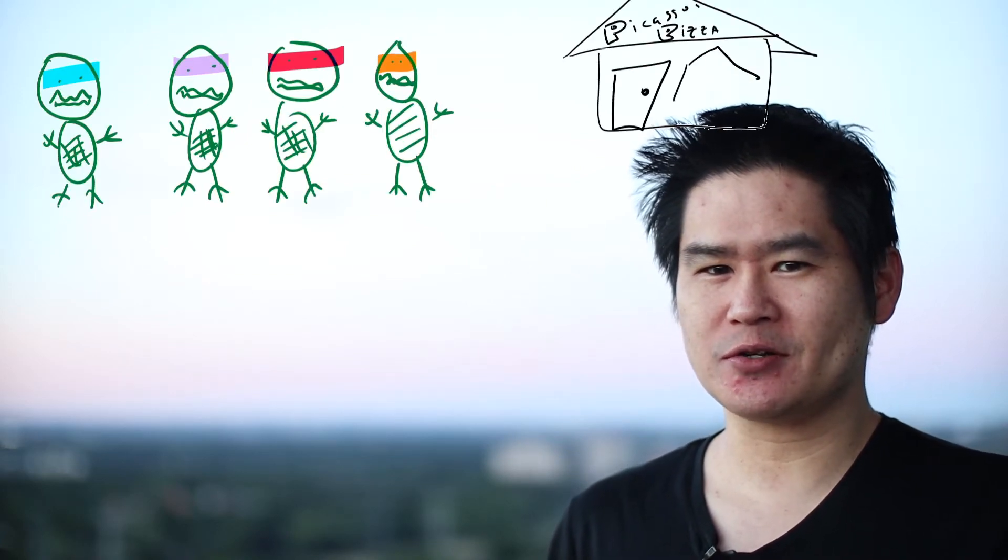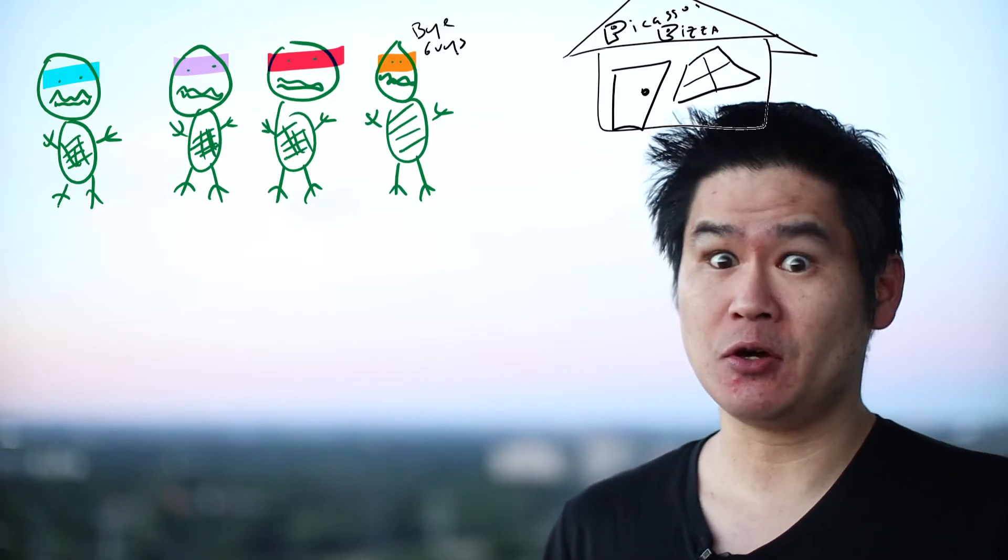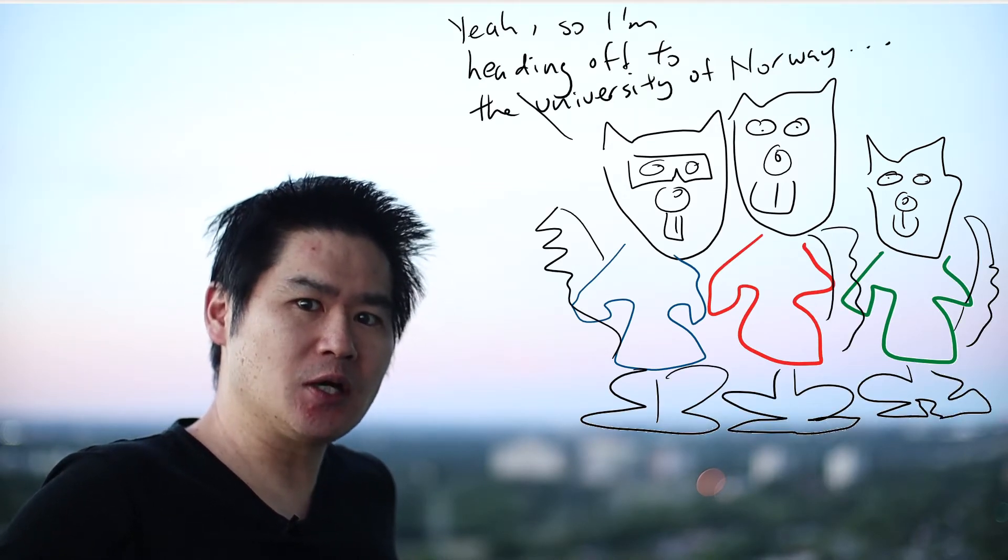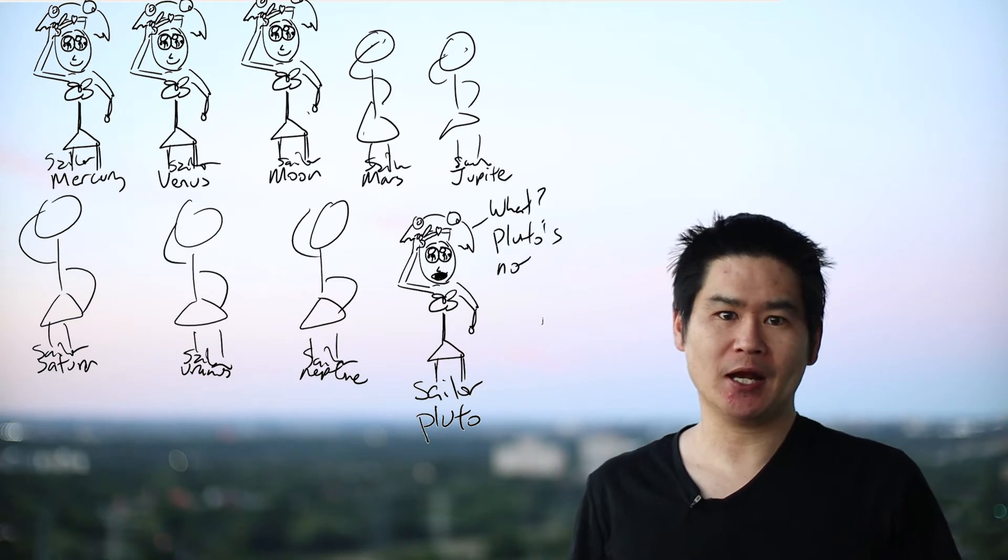Would the Teenage Mutant Ninja Turtles still be called the Teenage Mutant Ninja Turtles if one of the turtles left to start his own pizza business? Would Alvin and the Chipmunks still be called Alvin and the Chipmunks if Simon went to university in a different country? Would Sailor Moon still be Sailor Moon if Sailor Pluto had to leave because astronomers said that Pluto's not a planet anymore? I'm sure there's a lot that can be debated upon the questions that were just asked. So instead, let's talk about teams that cannot be broken up.